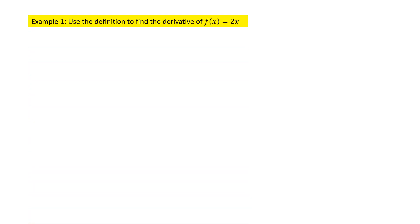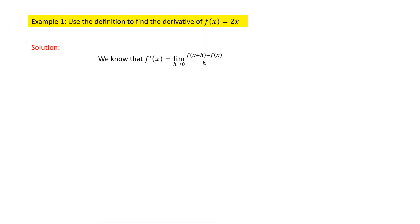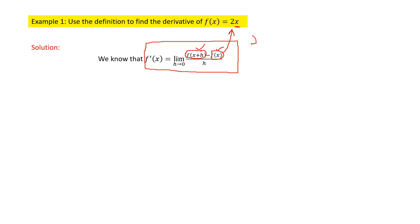Let us see one example. Use the definition to find the derivative of f(x) = 2x. From the definition, I need to know what f(x) is and what f(x+h) is. This f(x) is nothing but the given function, so here my function is 2x. To find f(x+h), we simply replace wherever x appears in the given function, changing x to x+h.